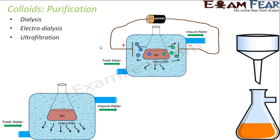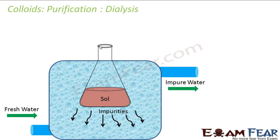We need to remove excessive electrolytes and impurities from the prepared colloids to preserve them. We use all three methods for this purpose. The first method is dialysis. In dialysis, membranes are used.